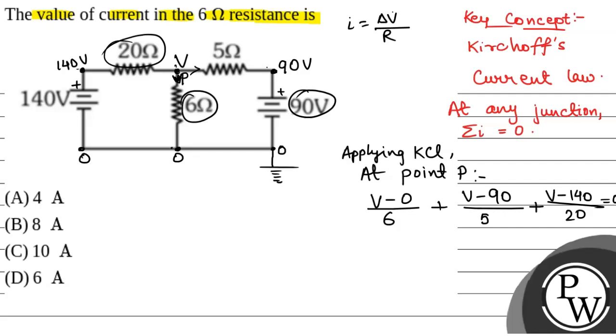So, all the sum will be equal to 0. The sum of all the currents will be equal to 0. So, this will be equal to 0.